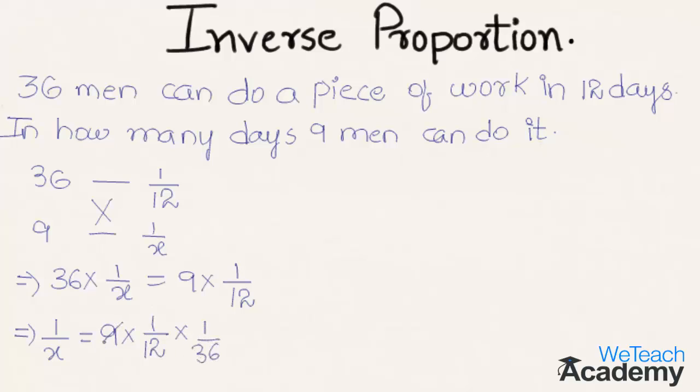So here, 9 one time is 9 and 9 four times is 36. That implies we get 1 by x is equal to 1 by 12 into 4, which is nothing but 1 by 48. So 1 by x is equal to 1 by 48.